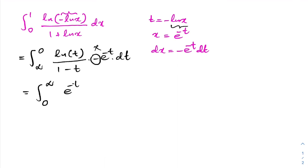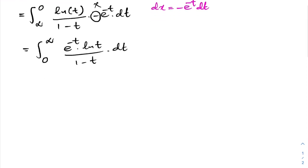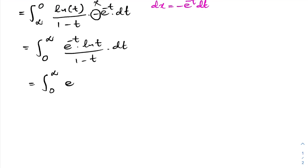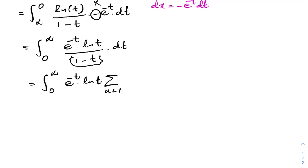As a next step, we write 1/(1 - t) as an infinite series: the sum from n = 1 to infinity of t^(n-1). So the integral becomes the integral from 0 to infinity of e^(-t) · ln(t) times the sum of t^(n-1) dt.